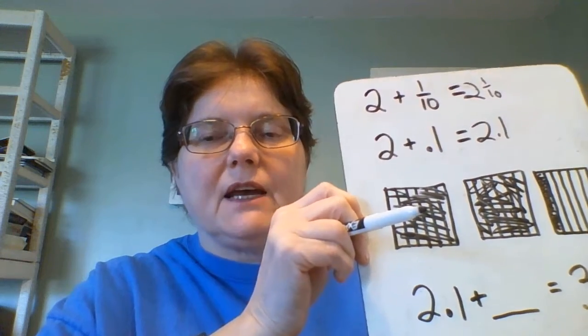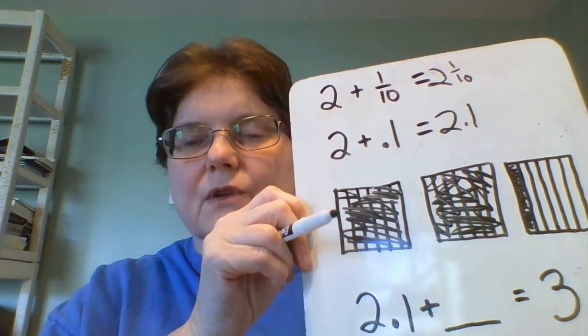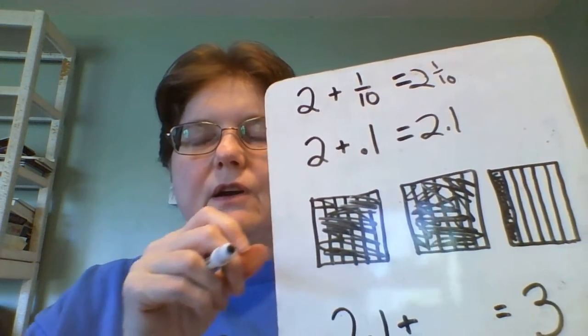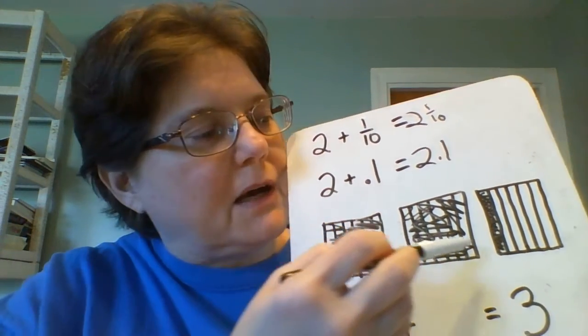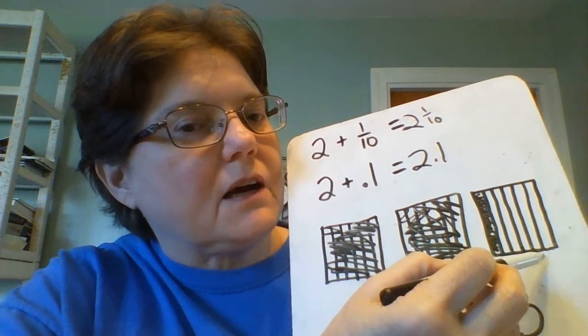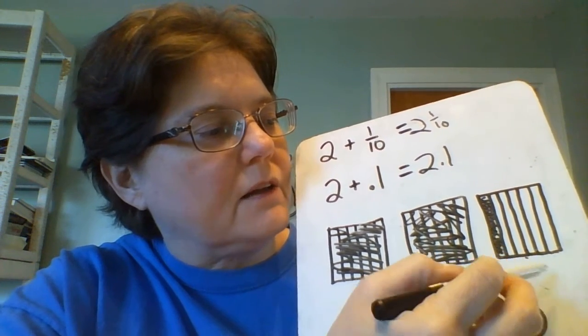Now how many more tenths do we need to make 3? We can use our area model. When you look here at the area model, how many more tenths do we need to color in to have 3 colored?